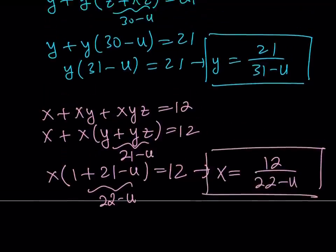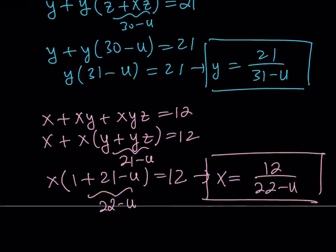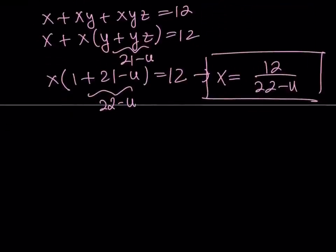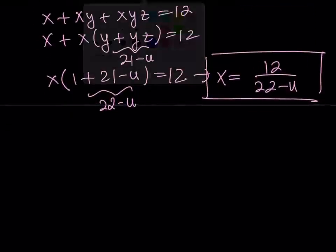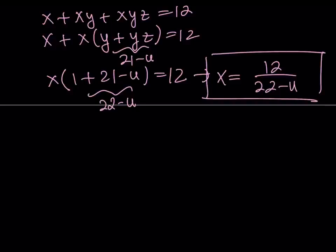So we were able to write x, y, and z, all of them in terms of u. I mean, in terms of u. So now, we can go ahead and put it together. Now, I'm going to use the first equation for this. x plus xy plus xyz equals 12. By the way, this is where the methods differ.